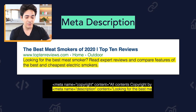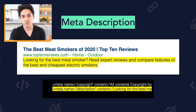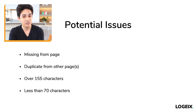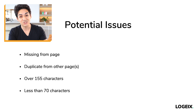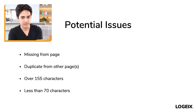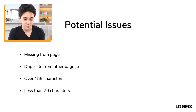Next we have the meta description — the little description that shows in Google search results below the URL and title. Potential issues: missing from the page, duplicate of another page's meta description, or incorrect length — over 155 characters or less than 70 characters. I'd personally prioritize missing meta descriptions based on current rankings of the site. Duplicates usually indicate a template issue or bad site setup.